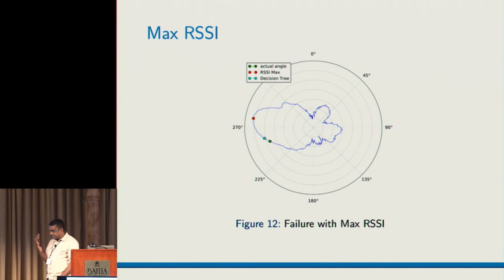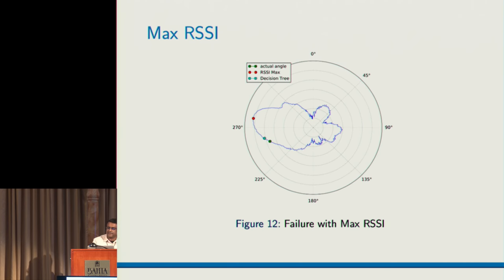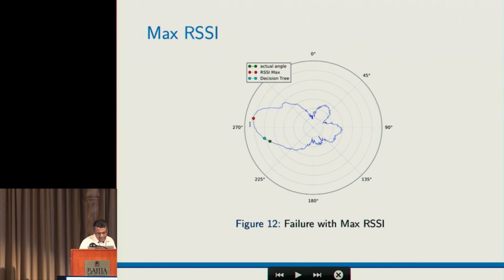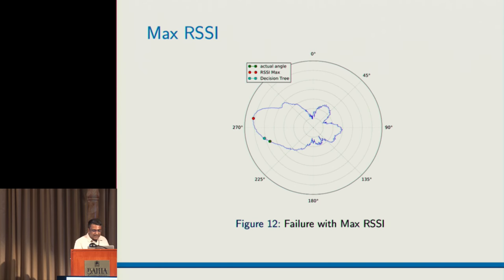The first trial we took was using the max RSSI value, because our initial idea was that as you rotate, near the transmitter you would get the maximum power. But when we computed the max power — shown in red — versus the actual angle of the transmitter — shown in green — we found that it was really way off. So if you just take the max based on RSSI values, you are not getting the direction of the transmitter, which was quite a setback.